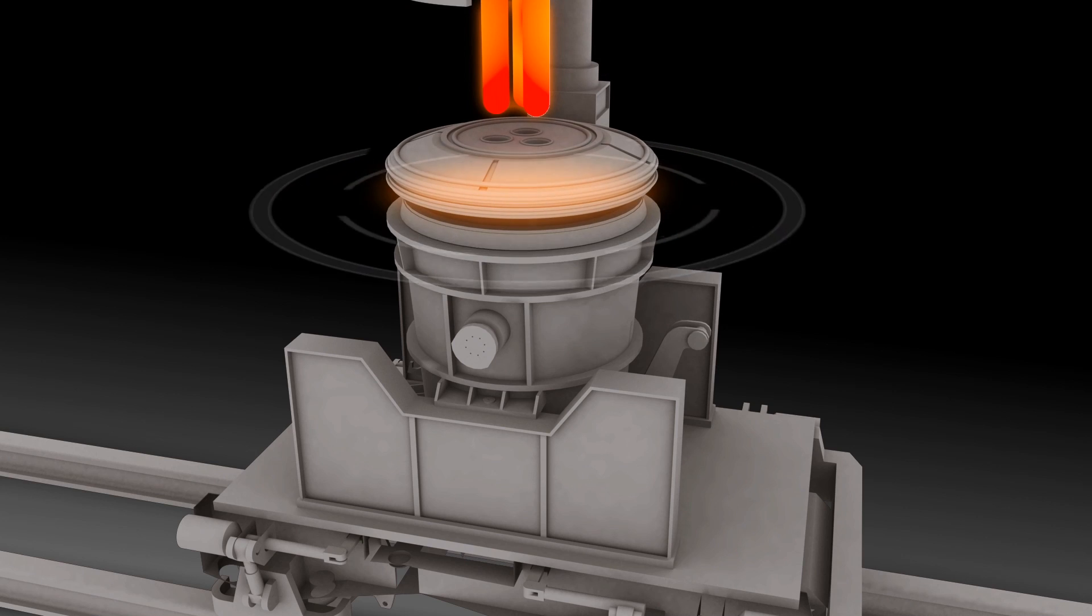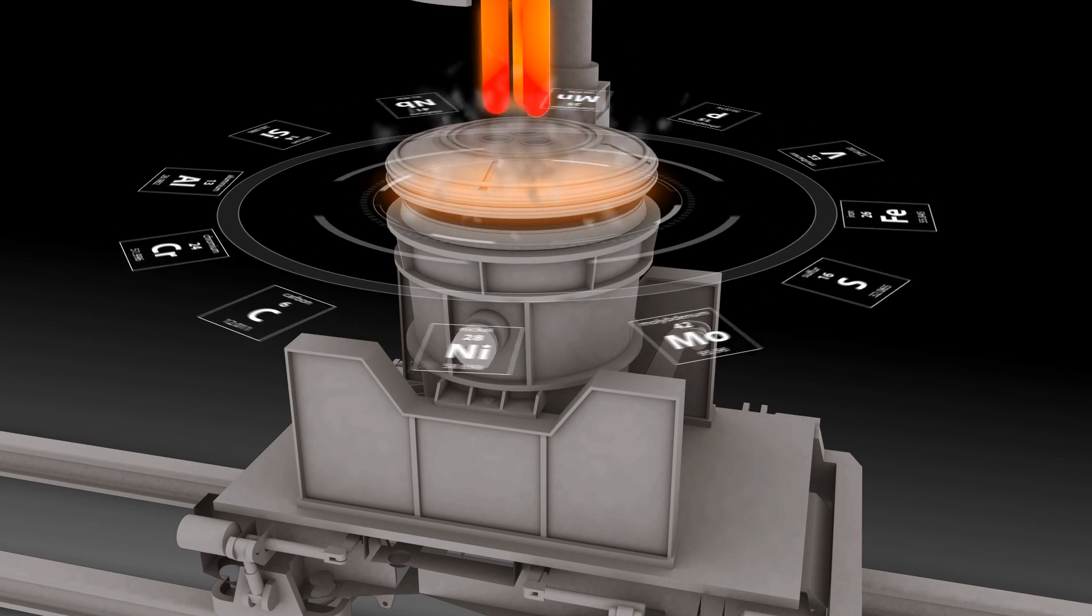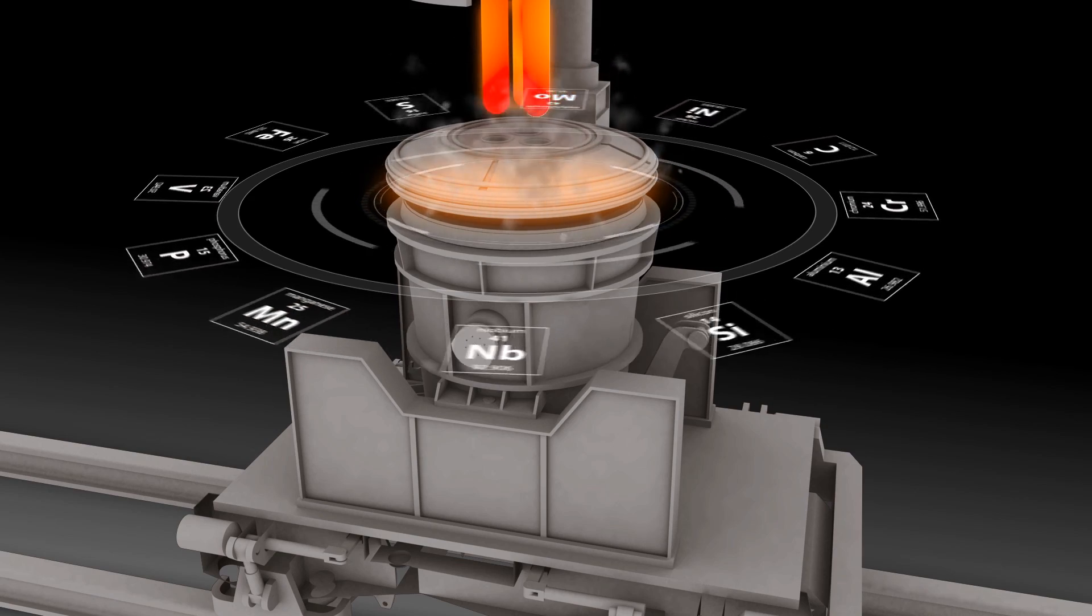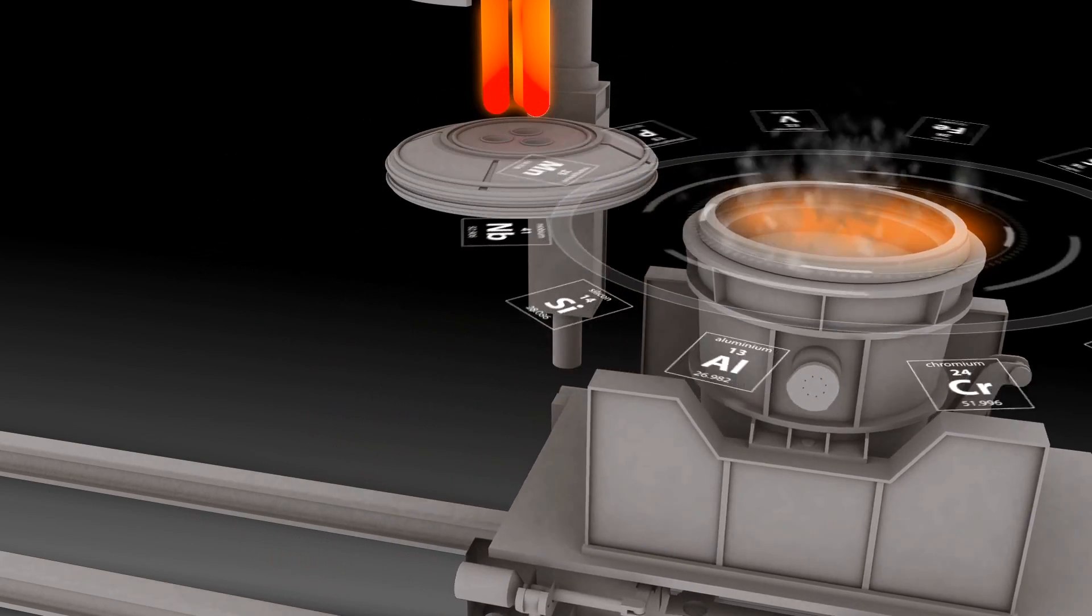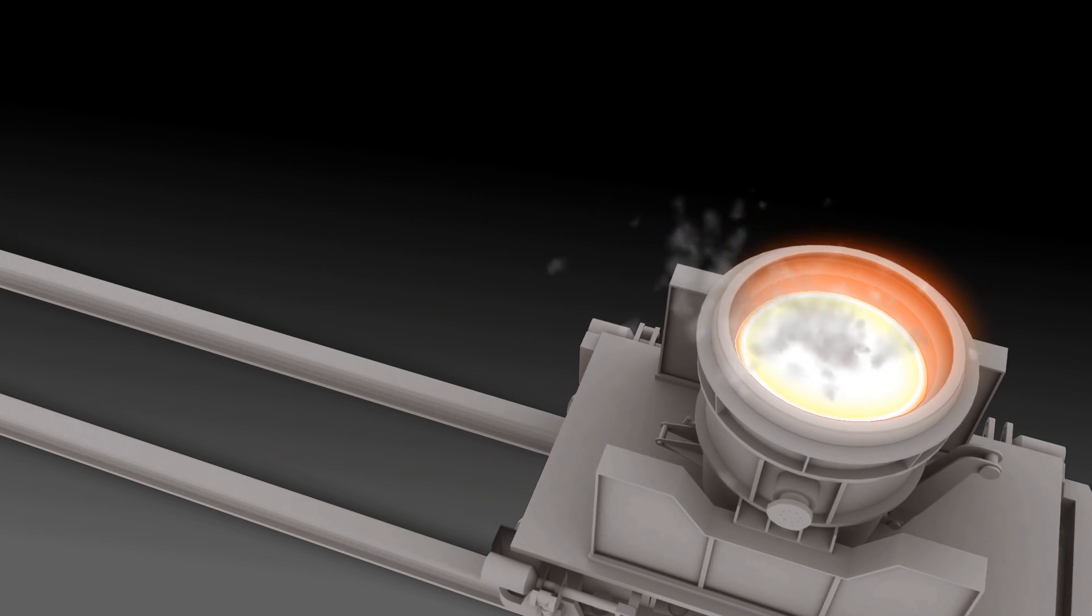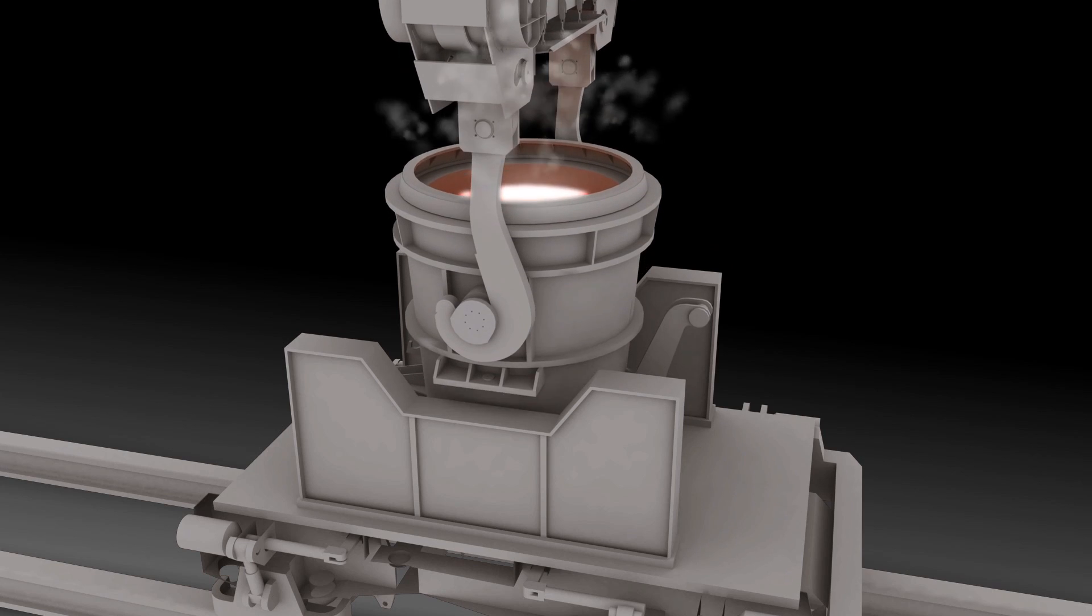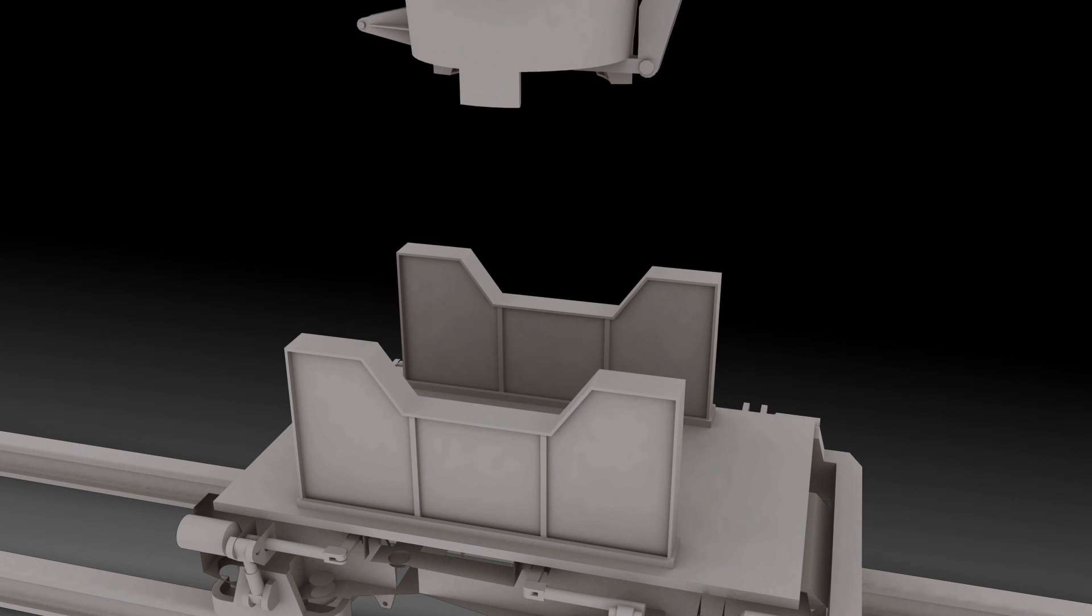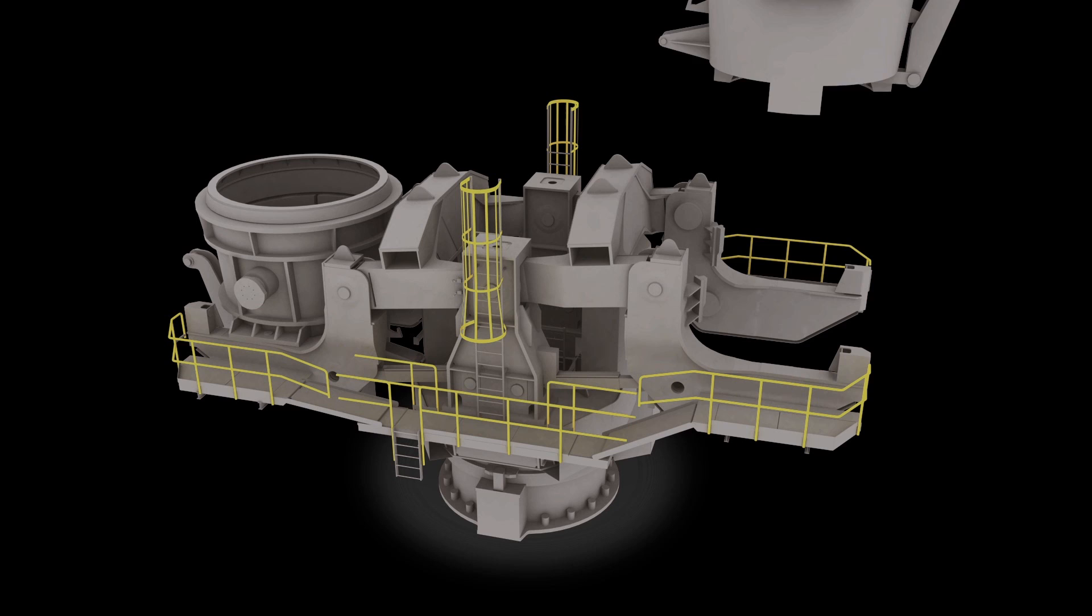A ladle departs the vacuum arc degasser after undergoing a rigorous refining process to meet our customers' exact chemistry specifications. The ladle then travels via transfer car from the ladle area to our new caster building. Once it reaches the caster, a 300-ton crane picks up the ladle. This crane lifts the ladle about 100 feet before placing it on a large rotating turret.